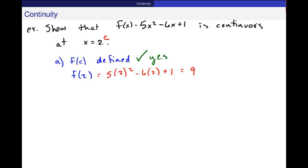Part B: The limit, the two-sided limit as x approaches c of f(x) exists. Let me check this. For this particular case, I have the limit as x approaches 2 of this function, 5x squared minus 6x plus 1. This is a polynomial, and we have that rule for polynomials.